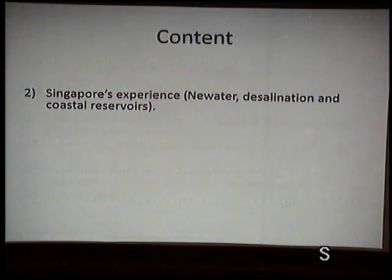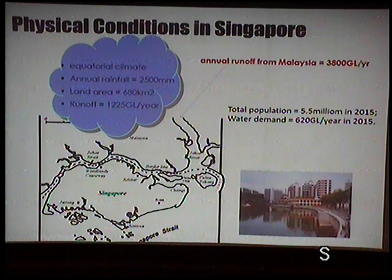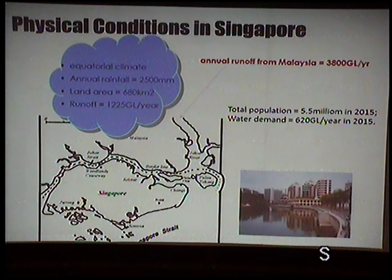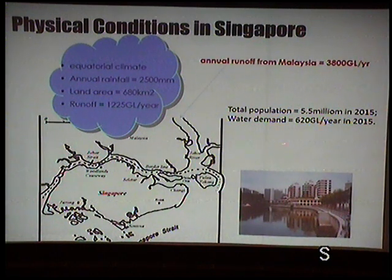Looking at Singapore's experience: Singapore has 2.5 meters of annual rainfall but only 700 square kilometers of land. The Johor River from Malaysia flows through Singapore's territory every year carrying huge amounts of water. However, Singapore's water planners thought they had no big rivers or lakes, and concluded they are the most water-scarce city-country — and relied on four taps including recycled water and desalination.